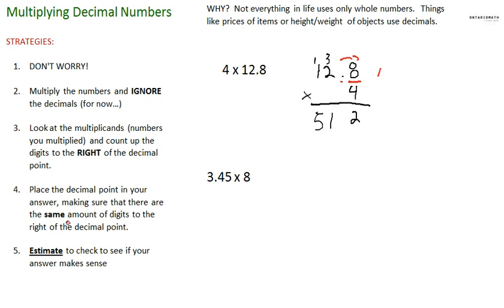Making sure that there are the same amount of digits to the right of that decimal point. If I put it here, it's not going to be right because there would be two digits to the right, and that's not right. So I'm going to put it right here. Now it makes sense because there's one number to the right of it, the 8, and here there's one digit to the right of it, the 2. So our answer is 51.2, or 51 and two tenths.